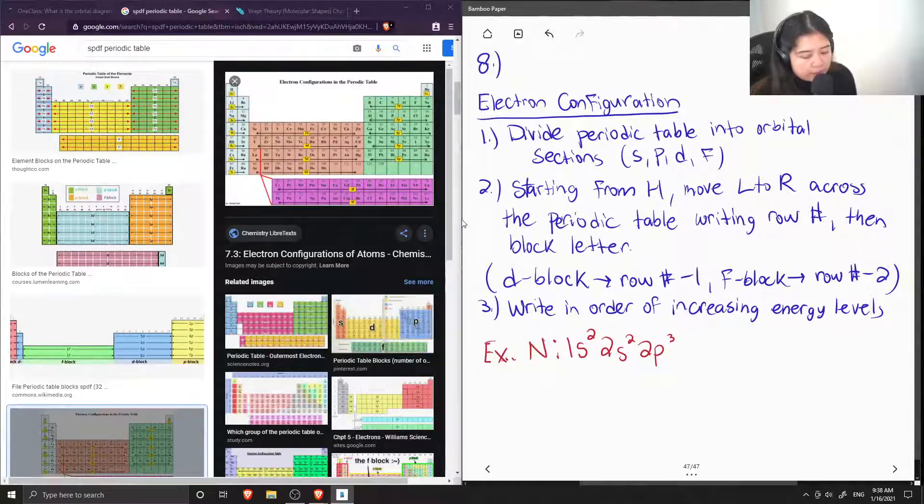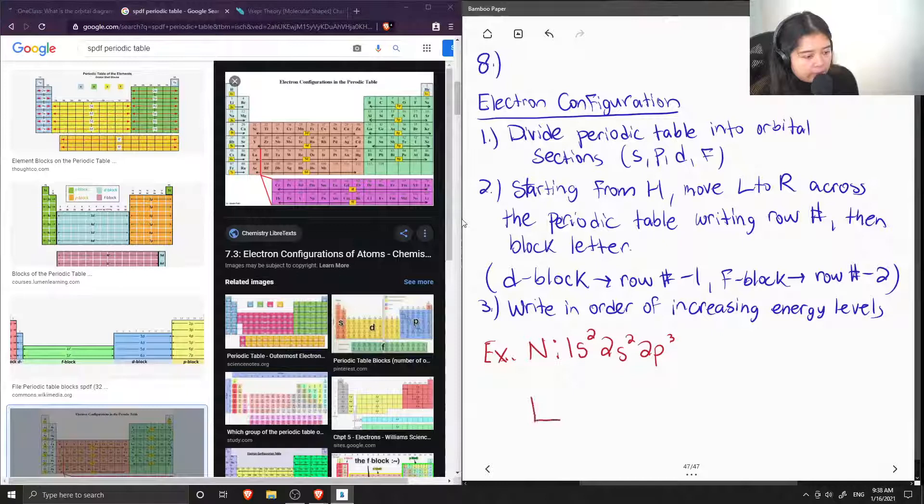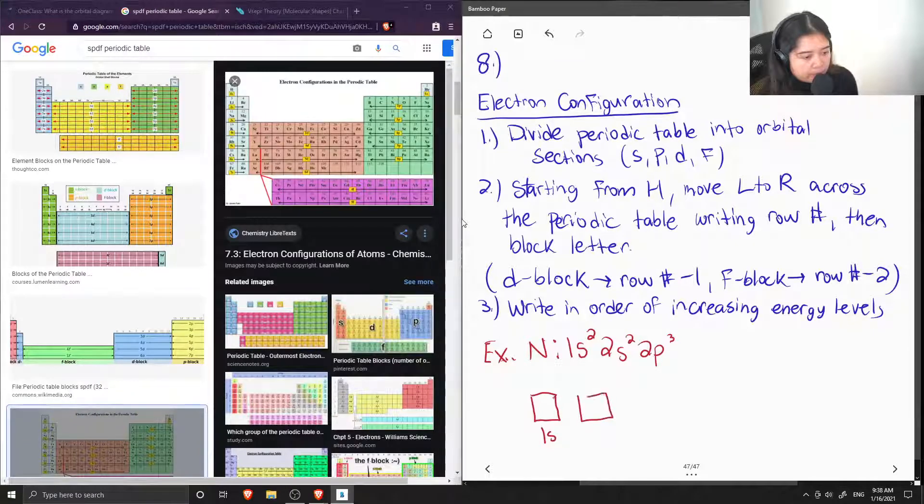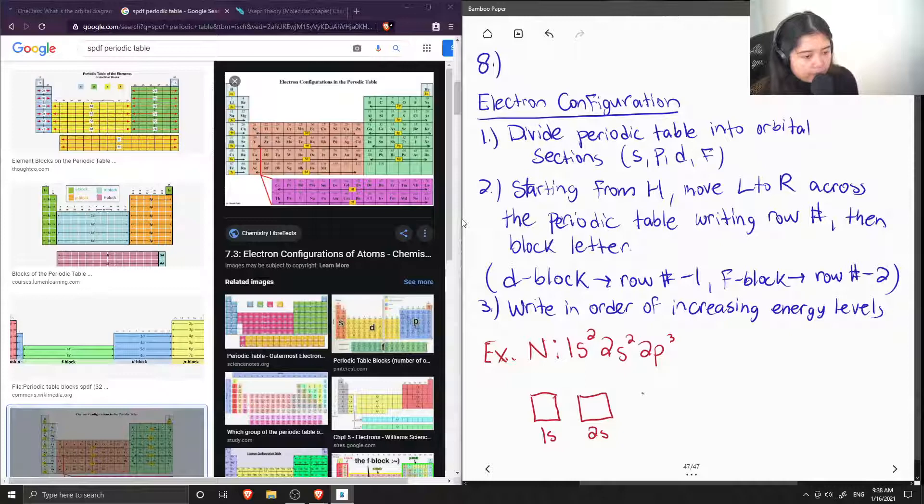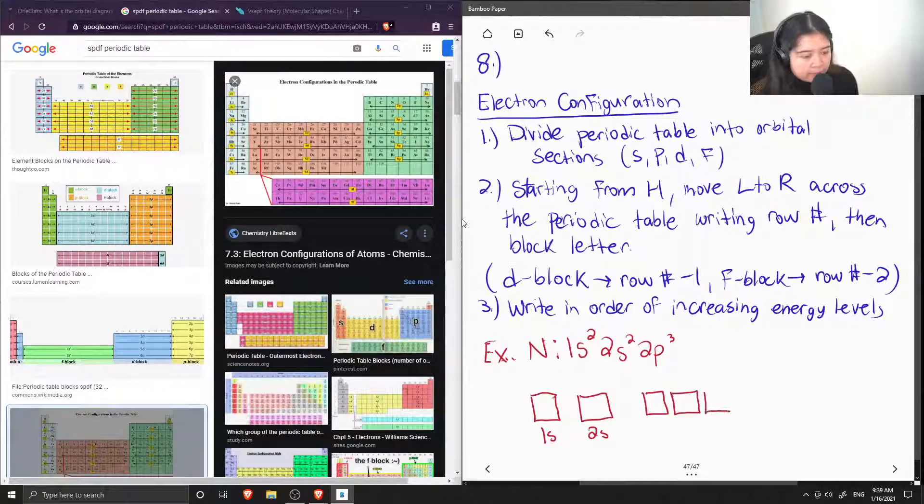So now, when we need to write in our orbital diagram, we can show the different orbitals using these boxes. So this can be the 1s orbital. This is the 2s orbital. And the 2p orbital can house 6 electrons in total. So I'm just going to show 3 boxes.